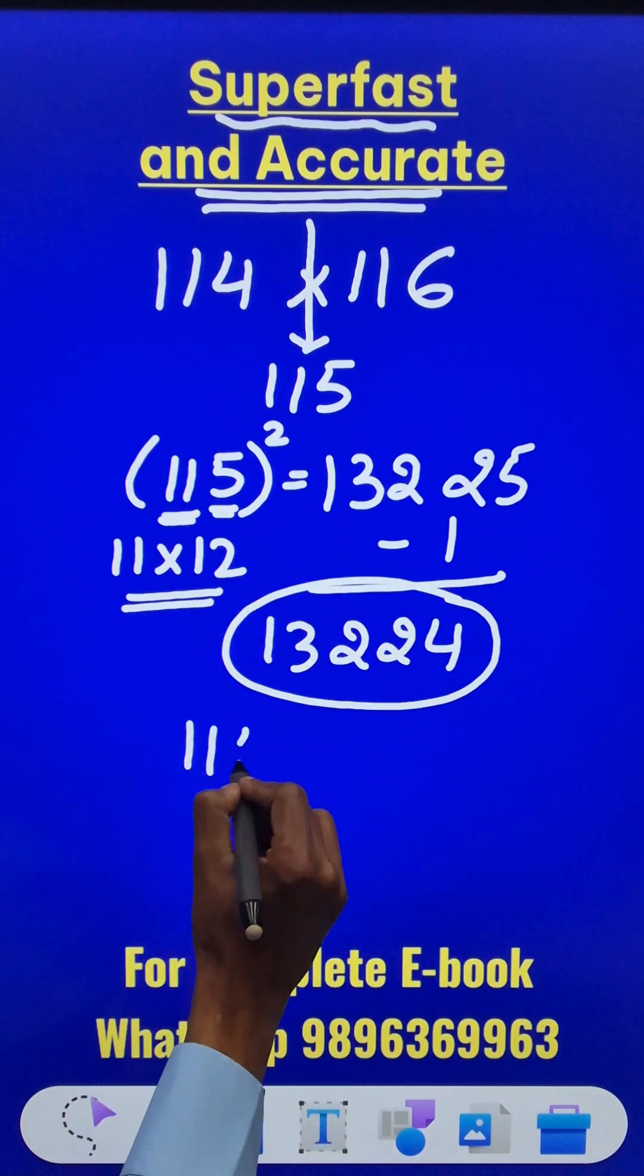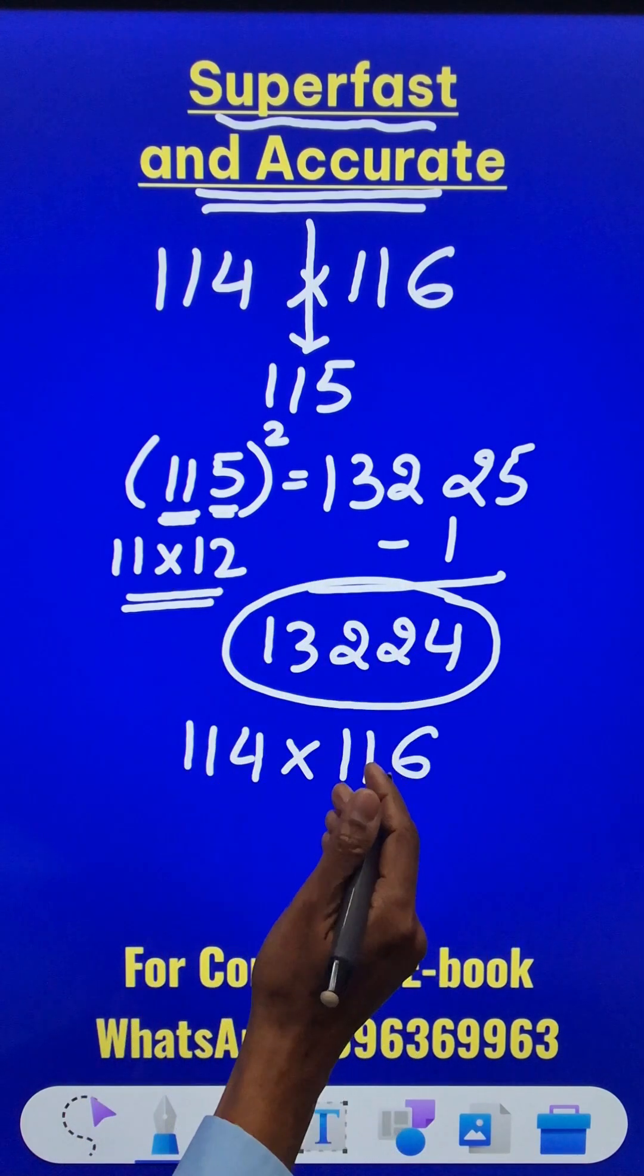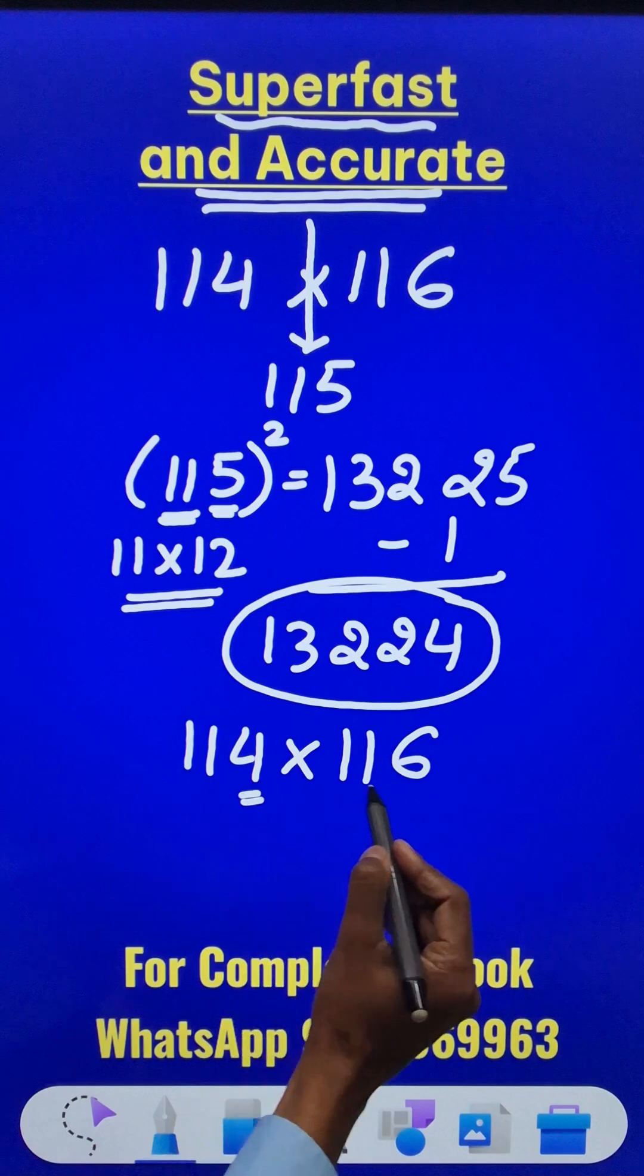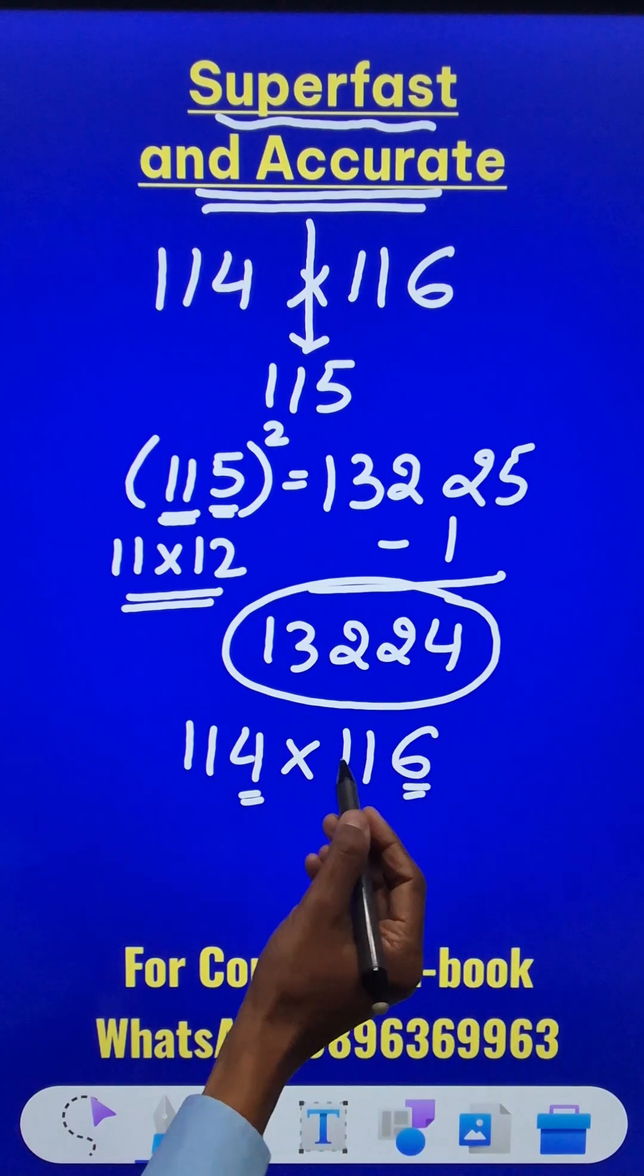The other method for doing 114 times 116 is much simpler. The unit digits here add up to 10, and when that happens,